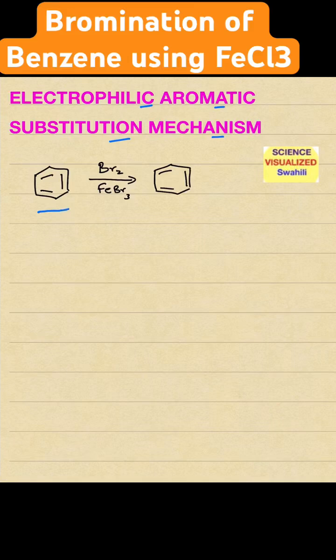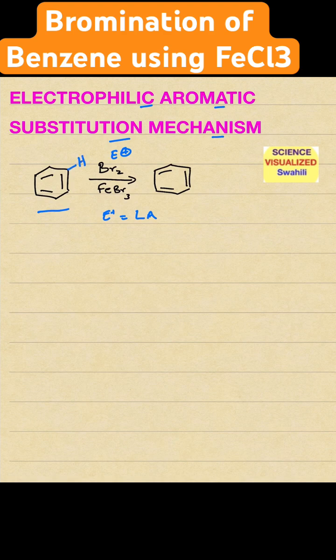Benzene in this case is reacted with an electrophile. Electrophiles, remember, equal Lewis acids — that means they accept electron pairs. What's basically going to happen is that one of the protons on the aromatic carbon gets substituted with the electrophile. You lose the hydrogen and replace it with the electrophile. That's electrophilic aromatic substitution.